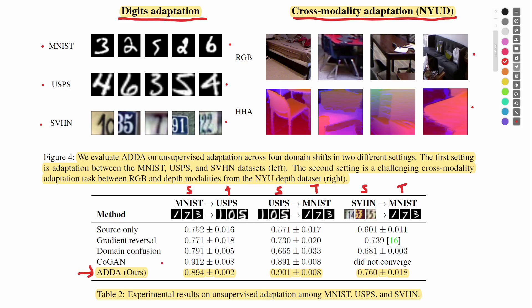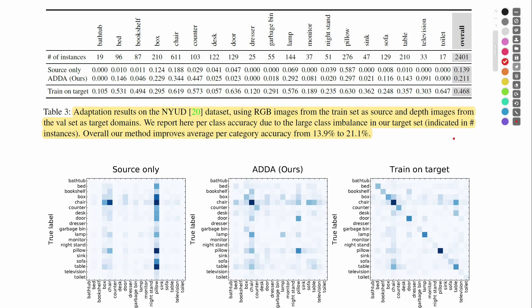The ADDA algorithm achieves the best results on nearly all three digit adaptation experiments, with the only exception being one case where it is beaten by the CoGAN model. For cross-modality adaptation, the authors display performance on each label separately because the class distribution is quite imbalanced. ADDA improves results on most labels compared to a model trained only on the source domain, and there is quite a large gap between ADDA and a model trained only on the target domain, which is understandable.